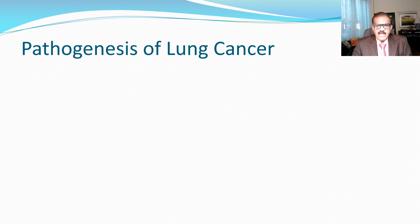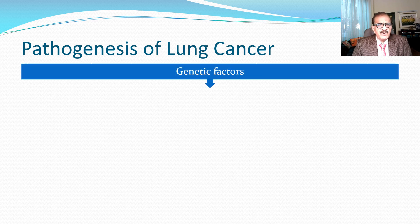Let me explain the pathogenesis. Mostly the pathogenesis of malignancies is not very well known. We know certain factors which predispose particularly in lung cancer and we also know the rough mechanism, but some of the links are missing. For all malignancies there is a genetic factor — people who are more prone to develop any cancer, including lung cancer, are so secondary to exposure to certain carcinogens.